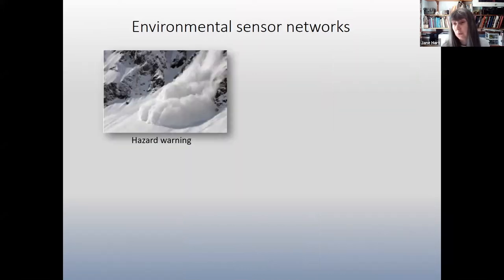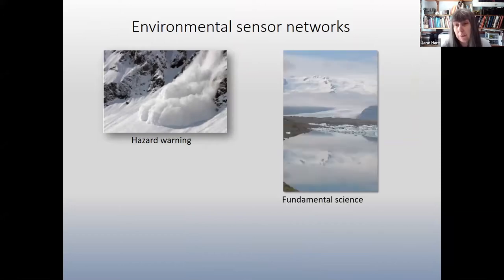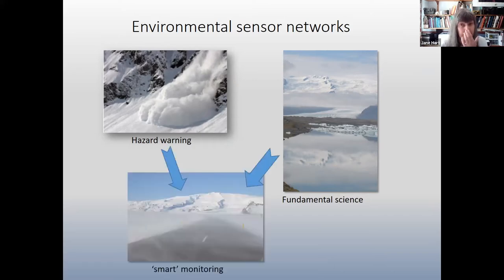You can use it for hazard warnings, so you can make predictions about events, you can use it for fundamental science. So that's particularly important in places like glaciology where it's very difficult to get to the environment in the winter. So you need something which continually monitors, and volcanoes are another example, it's hazardous. And you can bring this together to have some concept of smart monitoring.